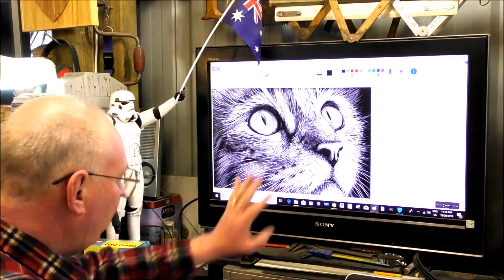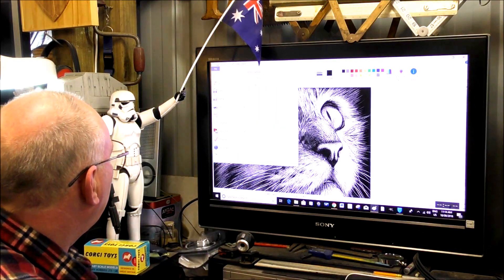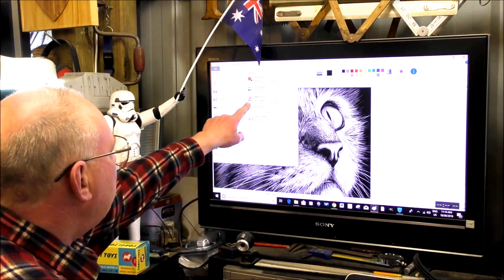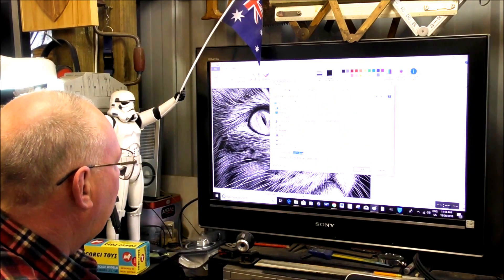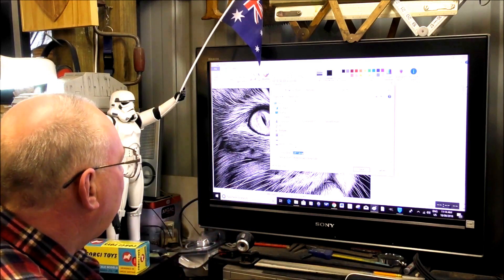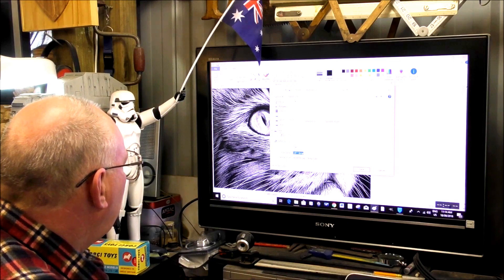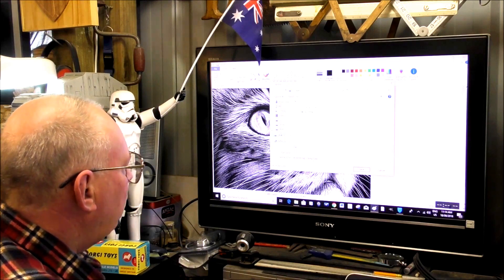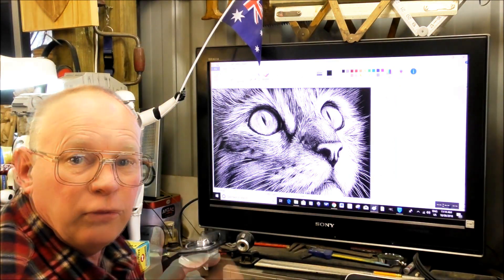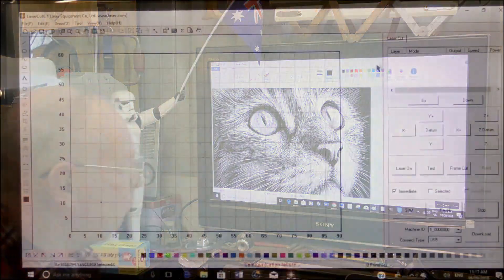So what we're going to do now is just very quickly go to File, Save As, Bitmap Picture, and we're going to save it as cat1 onto our removable device. I'm going to put it straight into LaserCut and further treat it in there.